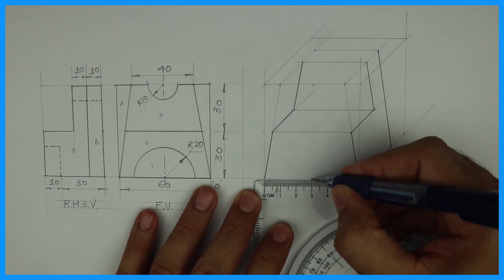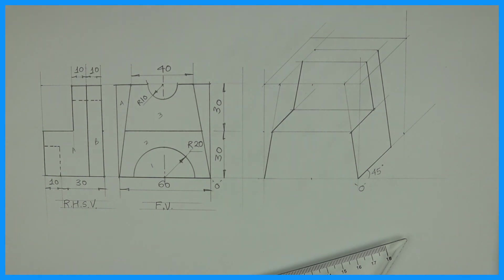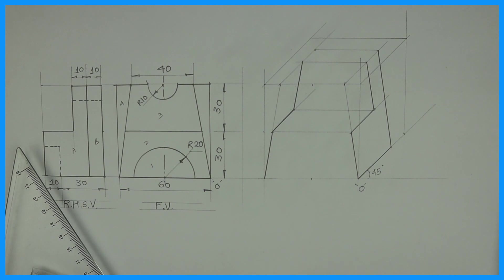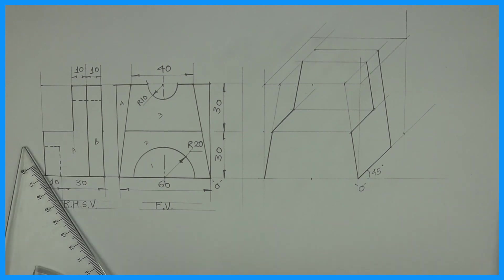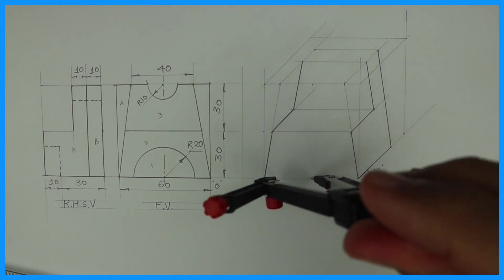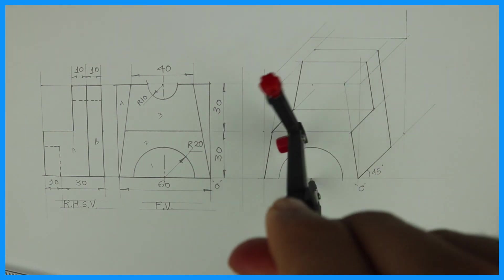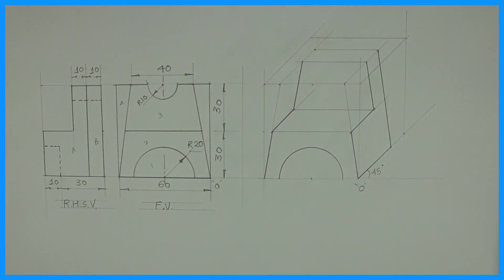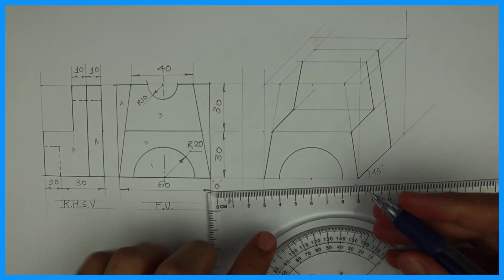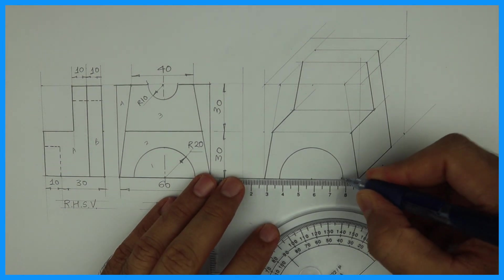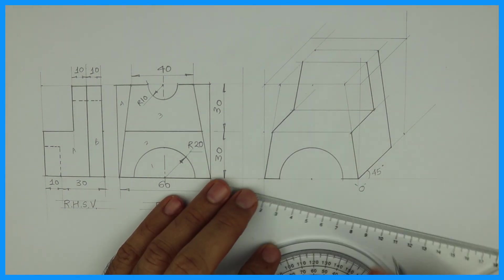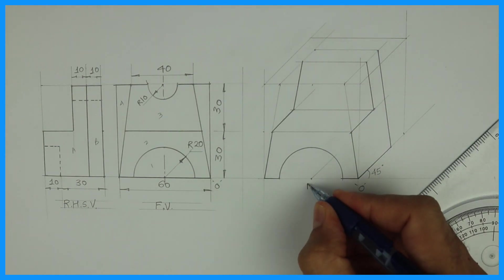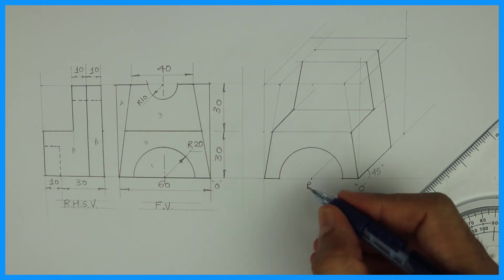Now what we need to do, we need to take center point and take radius 20. Now after this, you take this point behind. Let's say this is point P. You go behind by how much? 10.